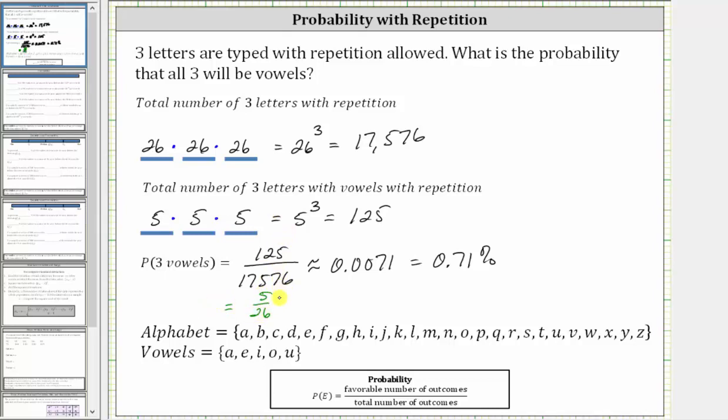And because repetition is allowed, the probability of typing a vowel for the second letter is five out of 26, or 5/26. And the probability of typing a third vowel is also 5/26.